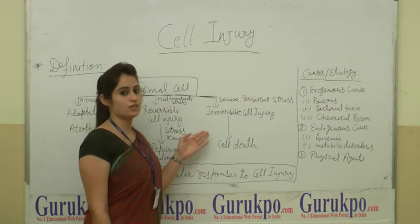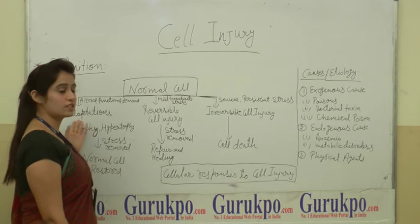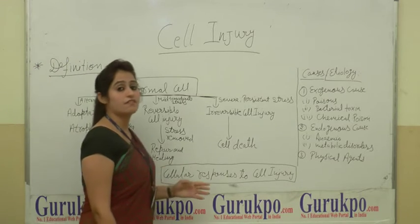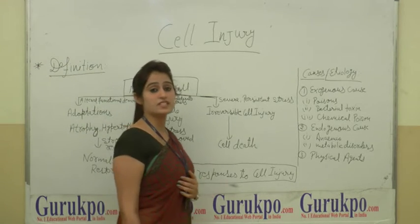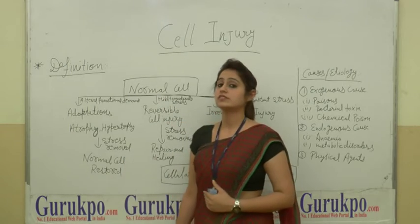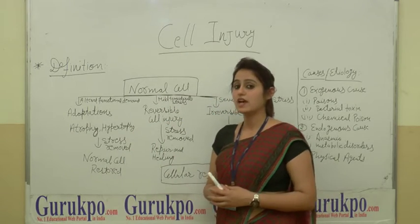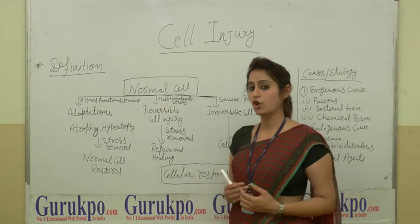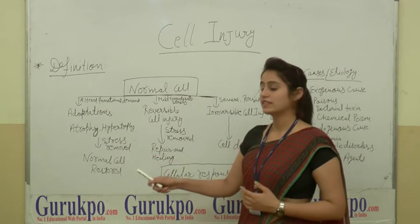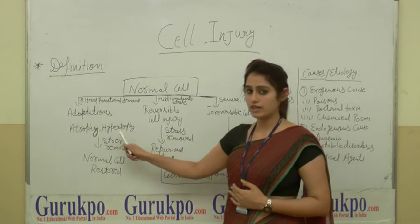First, Reversible Adaptation Cellular Injury. Adaptation — when there is increased functional demand and change, the cell may adapt to changes and reverse back to normal when the stress is removed. That is the Adaptation Cellular Injury.